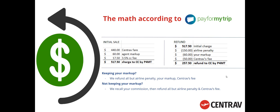Now let's look at the math — it's not as complicated as it might seem. The initial sale, shown on the left: the Centrav fare was $4.40 in this example, the agent markup was $60, and there was a 3.5% credit card fee of $17.50 — total charge $517.50. When it comes time for the refund, we look at the $517.50, deduct the airline penalty, deduct your markup, and deduct Centrav's fee — which is currently $50, subject to change. Amount refunded to the credit card: $250.50.